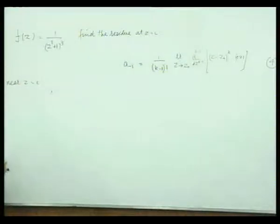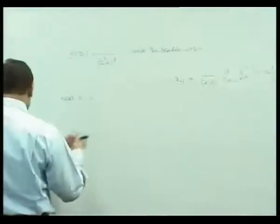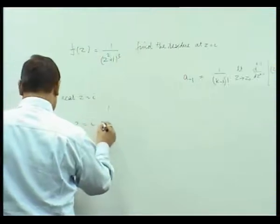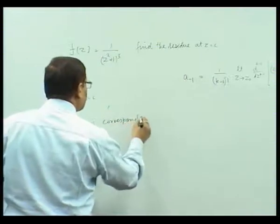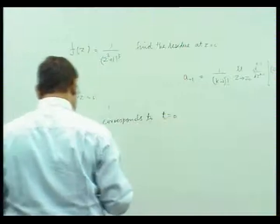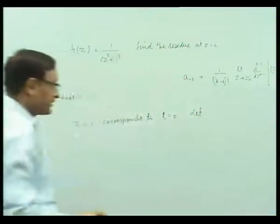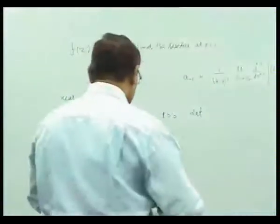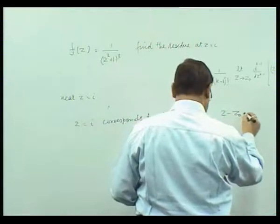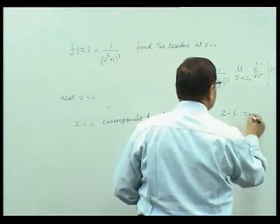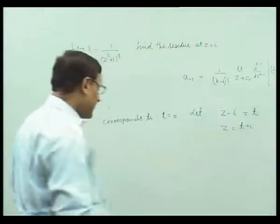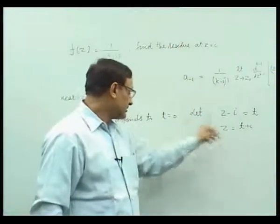Therefore we substitute — we translate — so that z = i corresponds to t = 0. Let z - i = t. From here z = t + i, and if the value of z is i then the value of t is 0.